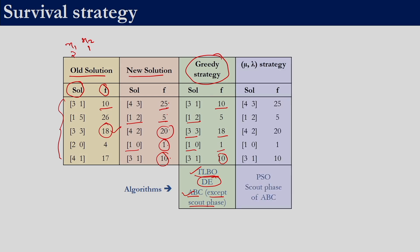The second strategy is the mu comma lambda strategy, in which the new solution is always taken into the population — we do not care whether it is better or not. If the old fitness values were 10, 26, 18, 4, and 17, and the new solutions have fitness 25, 5, 20, 1, and 10, we do not compare them — we directly take the new set of solutions. This is known as the mu comma lambda strategy and was used in particle swarm optimization as well as the scout phase of ABC.